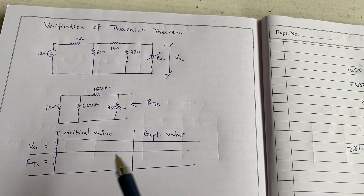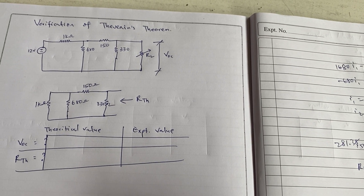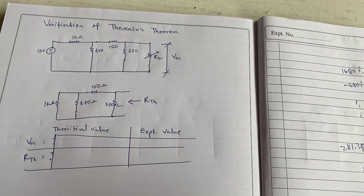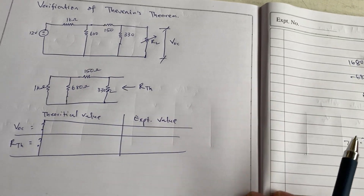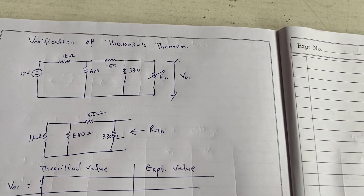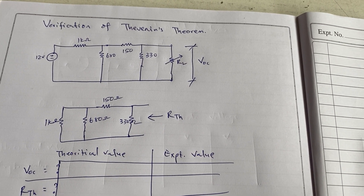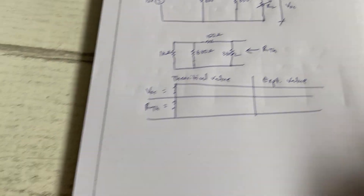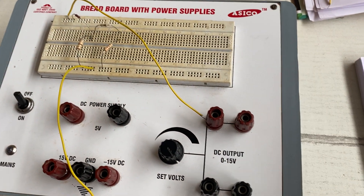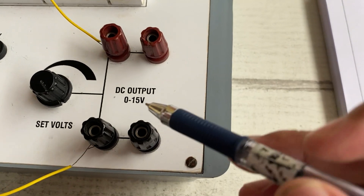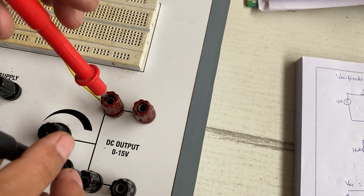For the experimental values, we are going to obtain them through the experiment. This is the connection that we have — this is the circuit diagram, and here is the physical connection. The supply voltage is 0 to 15 volts, but we are going to set it to 12 volts.